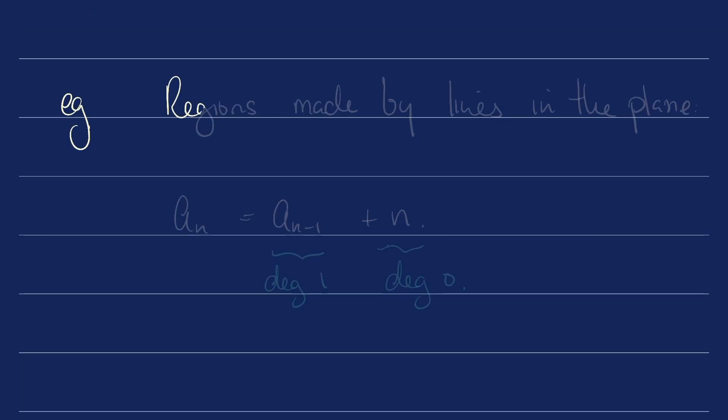For example, the sequence formed by the number of regions made by n lines in the plane is given by a_n = a_(n-1) + n. Here this is degree 1 and here we've got a degree 0 term.